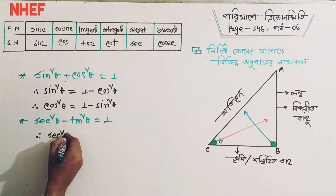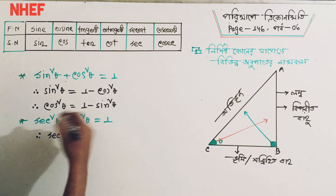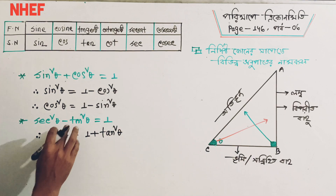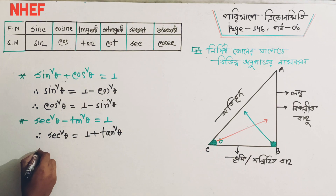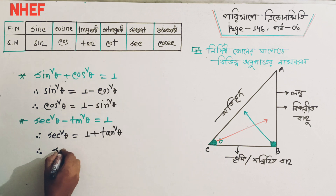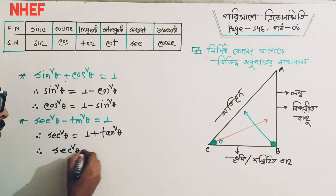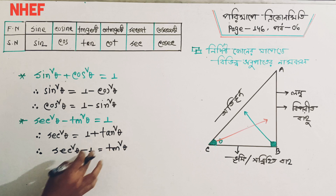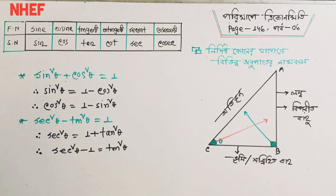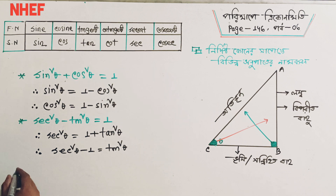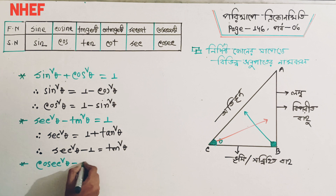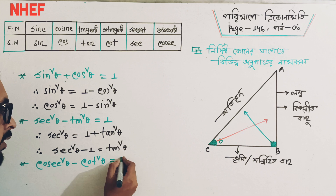So, sin²θ plus cos²θ is 1 minus cos²θ plus cos²θ. Tan squared theta, right? So if you have tan squared theta, then you will get tan squared theta. So you will get tan squared theta minus 1 is equal to tan squared theta. So, plus 1 is equal to minus 1, and minus tan is equal to plus tan. Now, let's take a look at this.